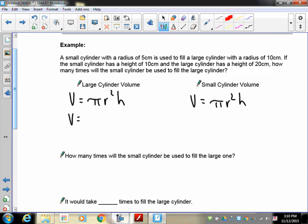A large cylinder has a height of 20. And it has a radius of 10. So making sure you don't mess things up. 3.14. Radius of 10 squared times the height of 20.